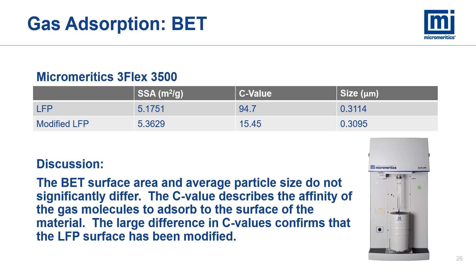In addition to the BET specific surface area, the BET C value can be determined, which is related to the strength of the physical adsorption bond between the sample surface and the adsorbed gas molecules. Note that even though the specific surface area of the LFP only changed slightly after surface modification, the C value changed drastically. This indicates that the nitrogen molecules are not attracted to the modified surface as strongly as to the unmodified surface. Thus the BET surface area from physical gas adsorption can yield information on the relative surface energy of the test specimen.